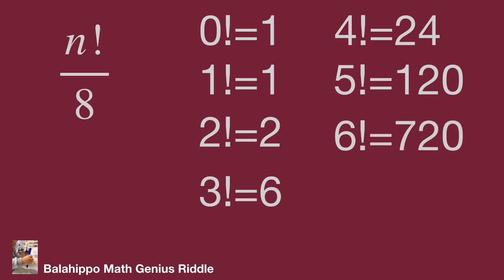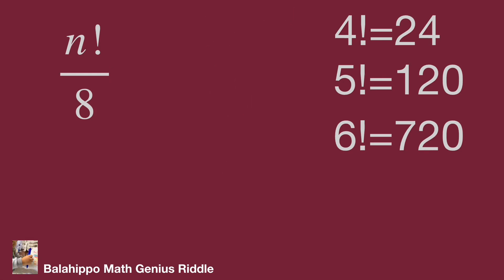Since n factorial over 8 must be an integer, n factorial must be at least 8, so n less than 4 is not valid. For n=4: 4!/8 = 24/8 = 3 (odd ✓). For n=5: 5!/8 = 120/8 = 15 (odd ✓). For n=6: 6!/8 = 720/8 = 90 (even ✗).